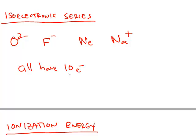The difference is the number of protons in the nucleus. The oxygen atom has the fewest protons. It has 8, fluorine has 9, neon 10, and sodium 11.